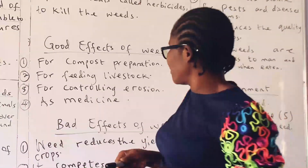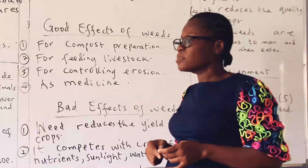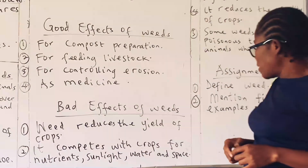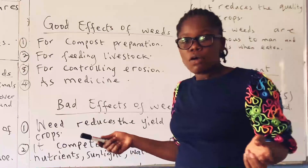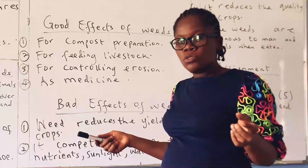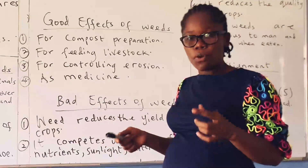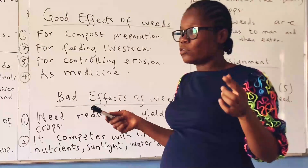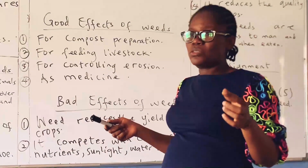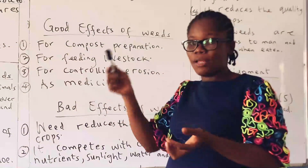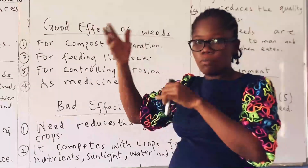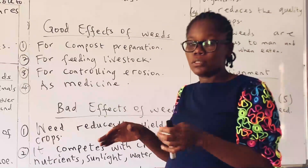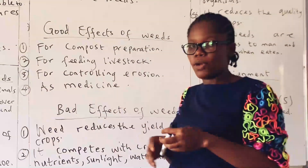Now what are the bad effects of weeds? The first one is that weeds reduce the yield of crops. Of course they compete with crops so they won't allow the crops to grow well, and as time goes on they will reduce the yield of the crops. The crops will have a low yield instead of producing more fruit, because the nutrients are taken away by weeds.